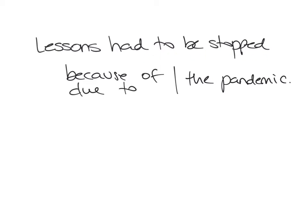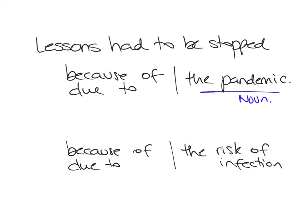Another example: 'Lessons had to be stopped because of the pandemic' or 'due to the pandemic.' Again, what you have here is a noun group, and that's it. Other possibilities could include 'lessons had to be stopped because of the risk of infection' or 'due to the risk of infection.' Again, these are noun groups — there is no verb involved.